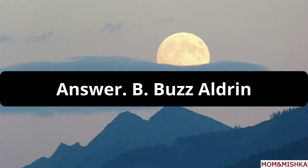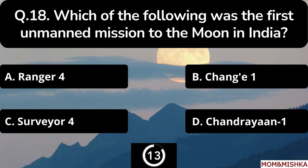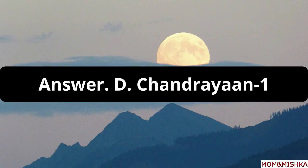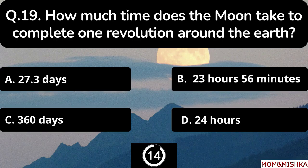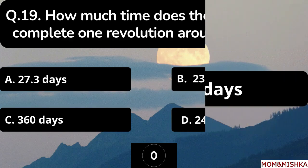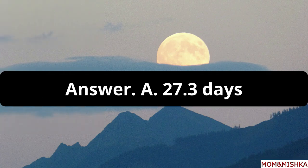Which of the following was the first unmanned mission to the moon in India? It's option D: Chandrayaan 1. How much time does the moon take to complete one revolution around the Earth? It's 27.3 days, option A.